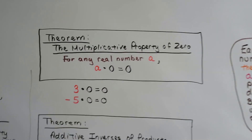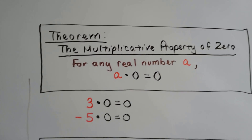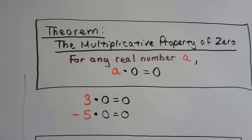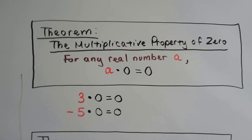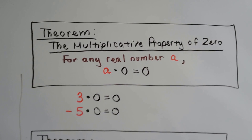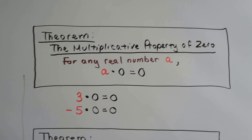The multiplicative property of zero says for any real number a, a times 0 equals 0. So 3 times 0 is 0, and negative 5 times 0 is 0.